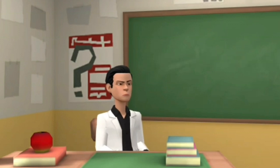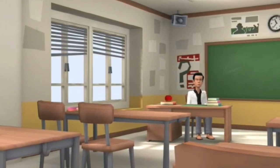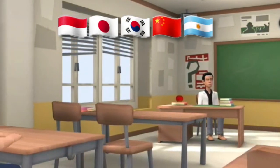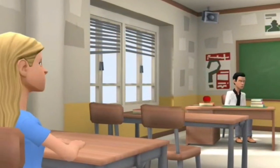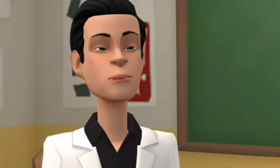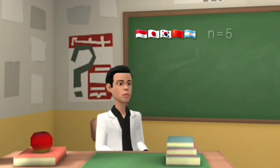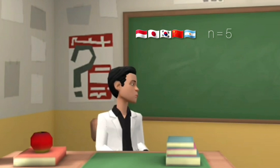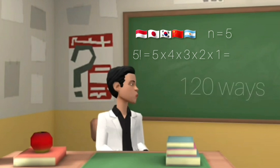For example: a committee will welcome a meeting of a state delegation attended by five countries. The committee will put out five flags from the five countries that were present. The question is: how many ways can the five flags be arranged? Since there are five flags, n equals five. The number of possible flag arrangements is five factorial: 5 × 4 × 3 × 2 × 1 = 120 ways.